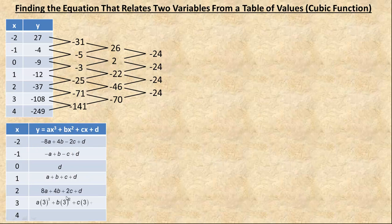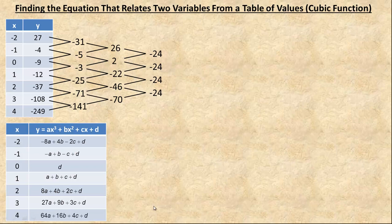When we put 3 in — 3 cubed is 27 so that is going to be 27a, 3 squared is 9 so it would be 9b, plus 3c plus d. And then the 4 — that works out to that expression. So now we find the differences. To go from this y value to this y value we subtract, just like I subtracted negative 4 take away 27 to get negative 31. I'll take this y value and subtract that one from it.